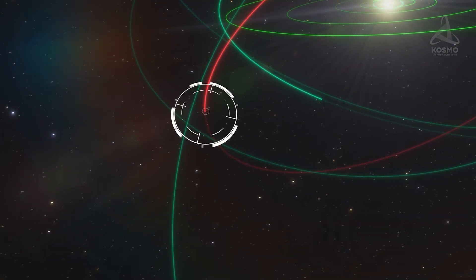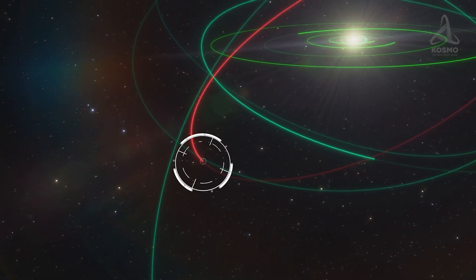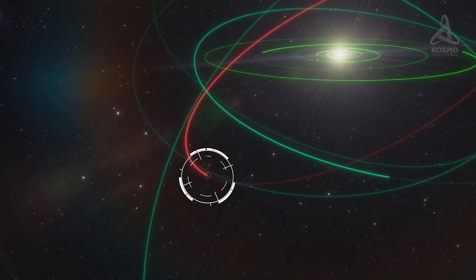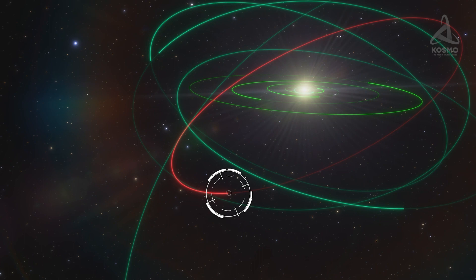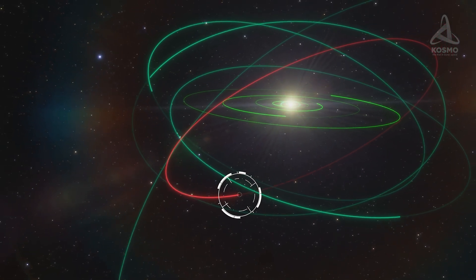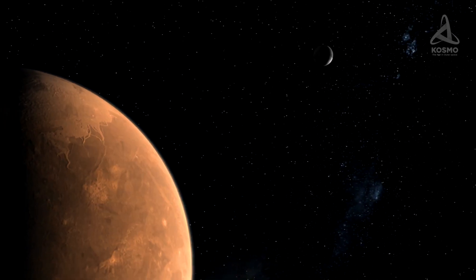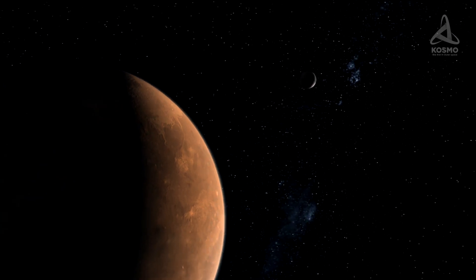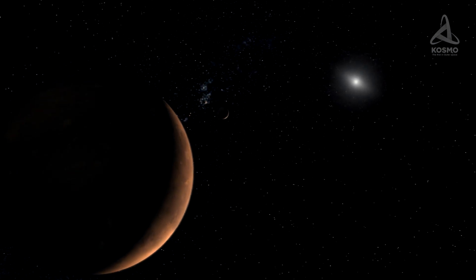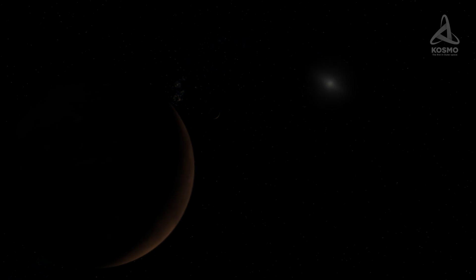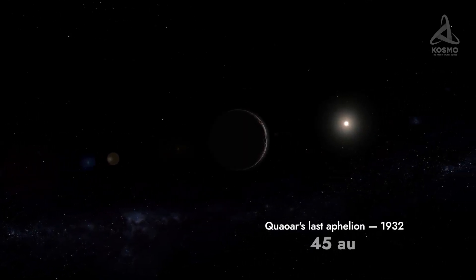Quaoar follows an almost circular orbit around the Sun, which takes it slightly less than 289 years to complete. The orbit eccentricity is just 0.04, which is two and a half times more than that of our Earth, and twice as small as that of Mars. It takes sunlight about five hours to reach Quaoar's surface. It has been calculated that the planetoid last reached its aphelion in 1932, with the distance to the center of our system approximately 45 astronomical units.